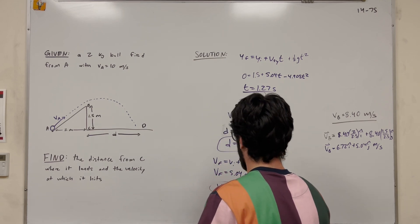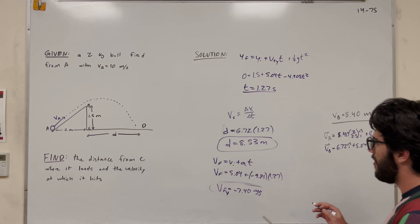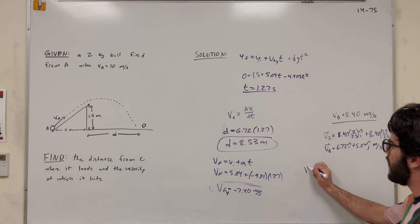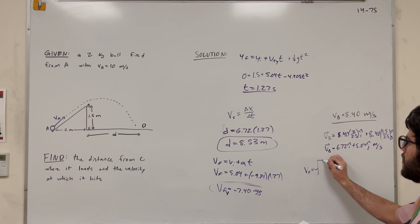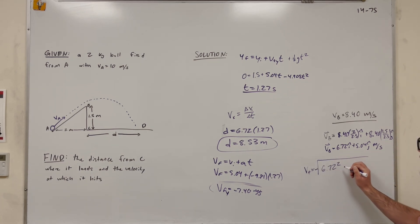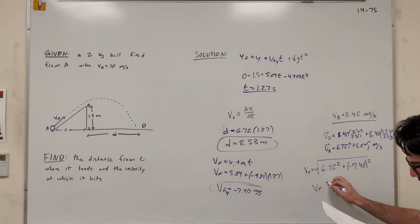So this is velocity final y. So then if we want to find velocity final, we just need to use Pythagorean theorem. The x component is 6.72. And then the y component is that plus negative 7.40 squared. Get that velocity final. This is equal to 10 meters a second.